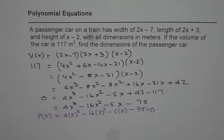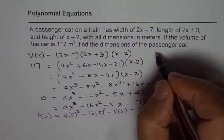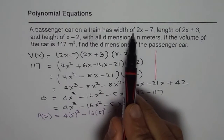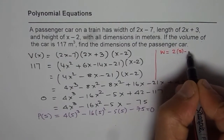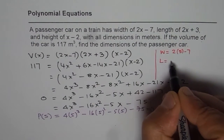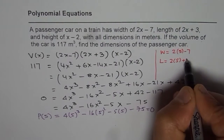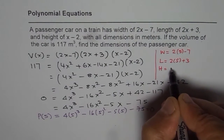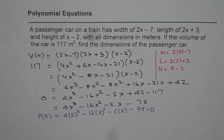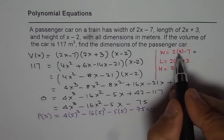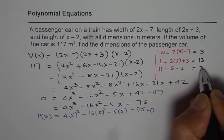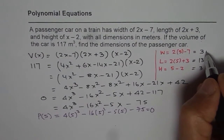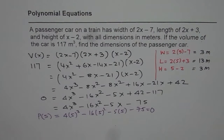Since x equals 5 gives a volume of 117, we can now find the dimensions. Width equals 2 times 5 minus 7, length equals 2 times 5 plus 3, and height equals 5 minus 2. Calculating: 2 times 5 is 10, so width is 10 minus 7 equals 3 meters, length is 10 plus 3 equals 13 meters, and height is 5 minus 2 equals 3 meters.